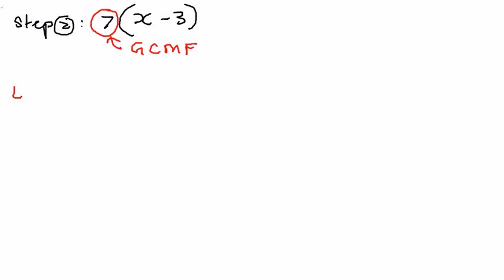In this example, let us say, we want to find the greatest common monomial factor for 15y cubed minus 25y squared. Let us break it down into these different steps.